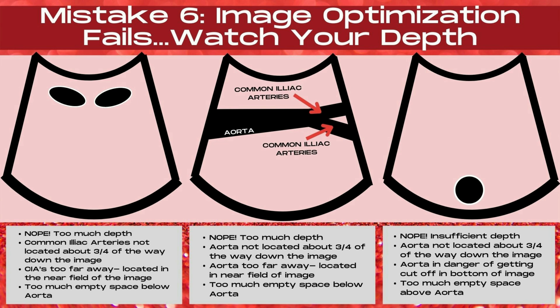There's too much empty space below the aorta in the middle image as well. In the image to the far right, there's insufficient depth — the aorta is not three quarters of the way down and is in danger of getting cut off at the bottom. There's too much empty space above the aorta, making fat and bowel the highlight. Remember: build your image around the aorta rather than the tissue around it.